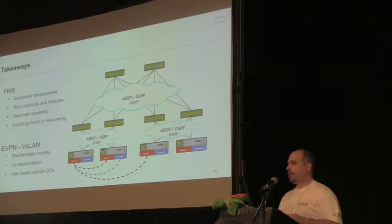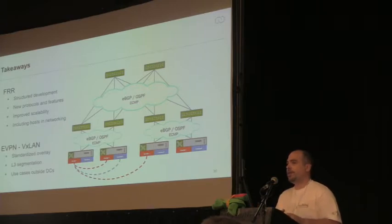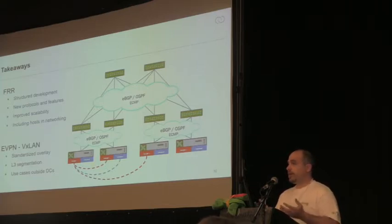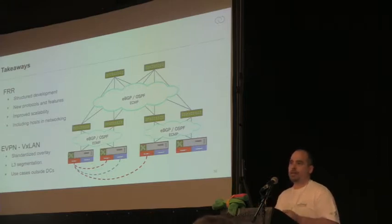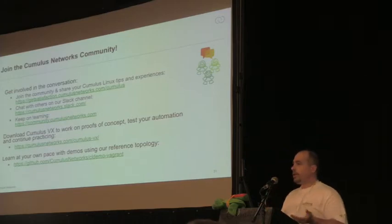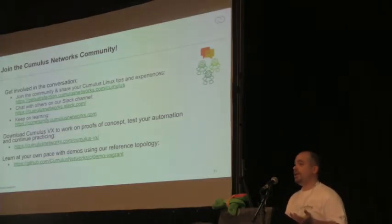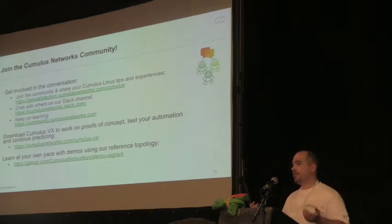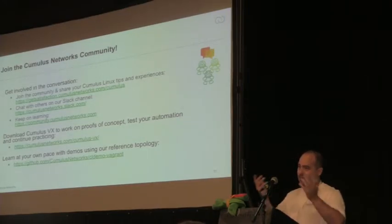For EVPN VXLAN, I've shown diagrams of typical data center setups, but it's not limited to a data center spine-leaf topology. Since you can do Layer 3 separation, you could also use it in small service provider environments. If your only requirement is Layer 3 separation and Layer 3 VPNs, have a look at this as an alternative to MPLS. We also have a virtualized version, and these days you can click on the website and it spins up an entire topology.